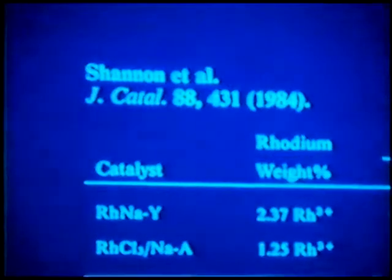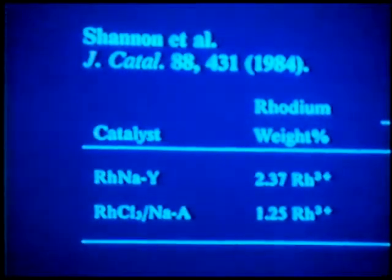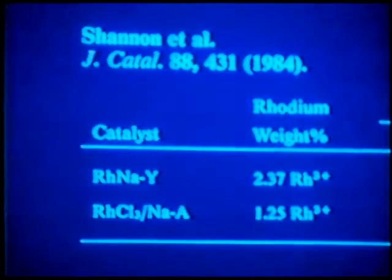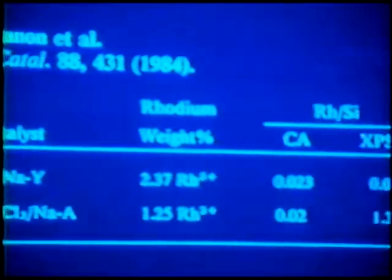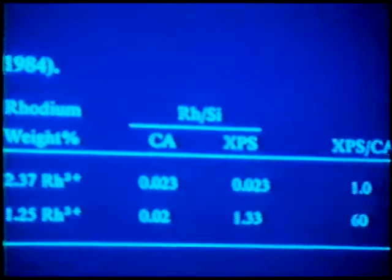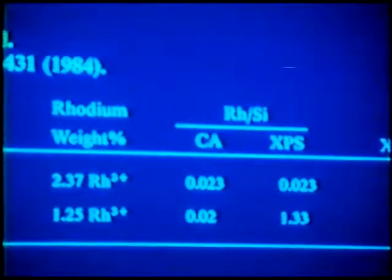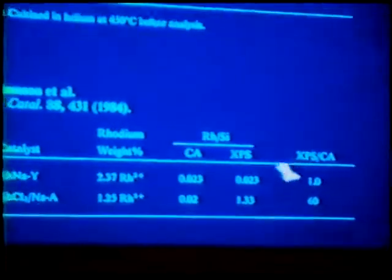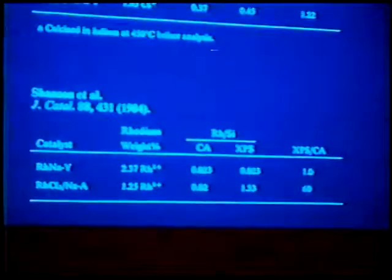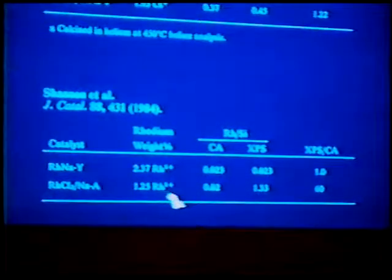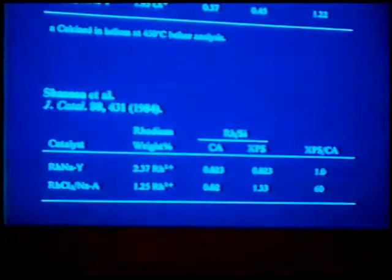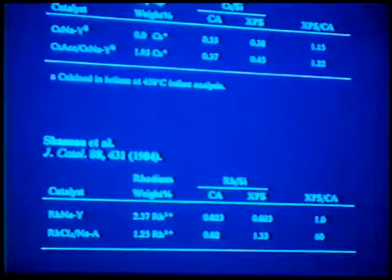To support this evidence, we look at work by Shannon et al., who looked at rhodium exchanged onto a Y-zeolite and a sodium-form A-zeolite. Rhodium in a plus-three oxidation state will form a large radius of hydration during ion exchange. For the Y at 2.3 weight percent loading, comparison of the rhodium-to-silicon ratios suggests that ion exchange occurred and the rhodium passed into the zeolite. With the small-pore sodium-A zeolite, at 1.25 weight percent rhodium, the surface ratio is near 60. This evidence coupled with ours suggests that the acetate decomposition products, even at 1.95 weight percent loading, are intracrystalline. We now have the potential to do shape selectivity.